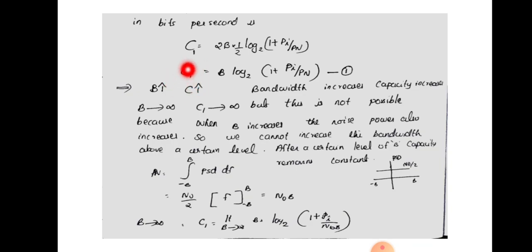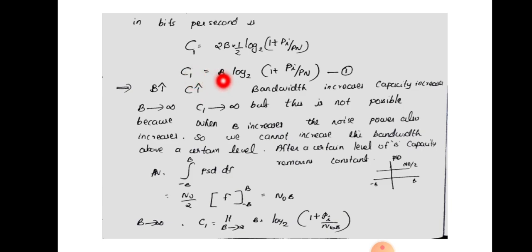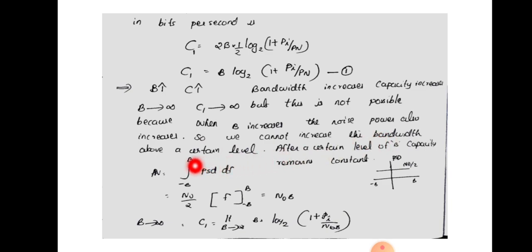From the equation C1 = B · log₂(1 + Pi/Pn), to increase channel capacity we can either increase bandwidth B or increase input signal power, since we have no control over noise power. Increasing bandwidth does increase channel capacity, but in real life, when bandwidth increases beyond a certain level, capacity stops increasing. This is because when bandwidth increases, noise power also increases.